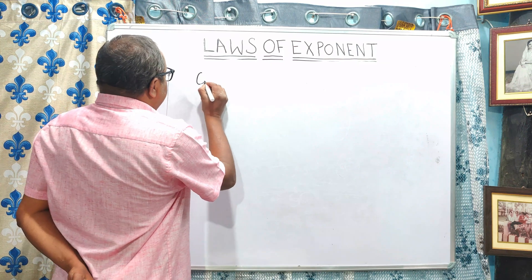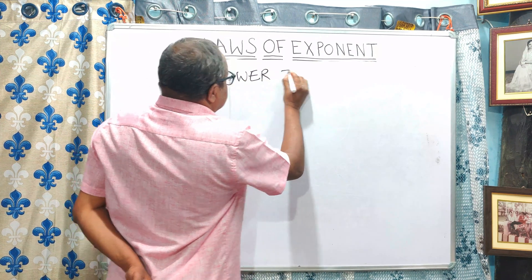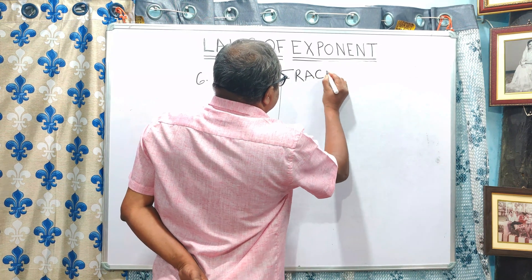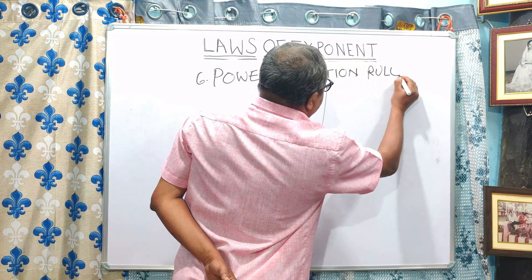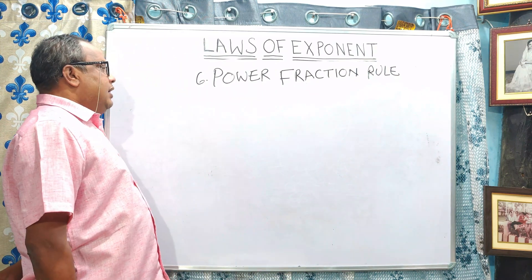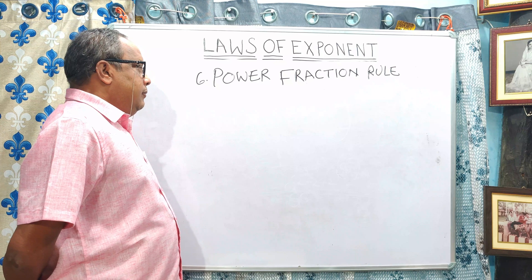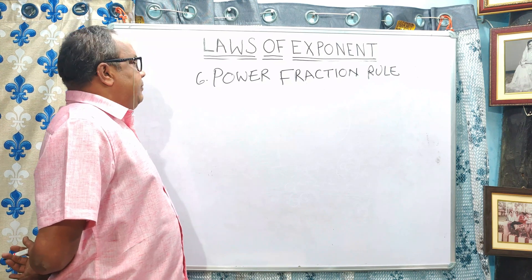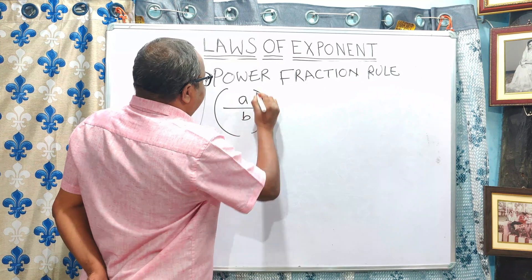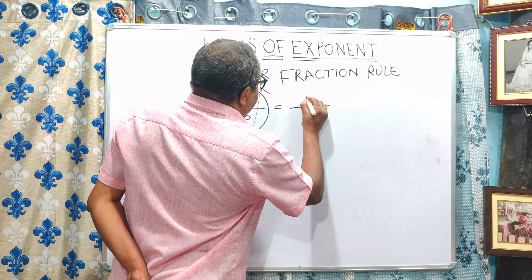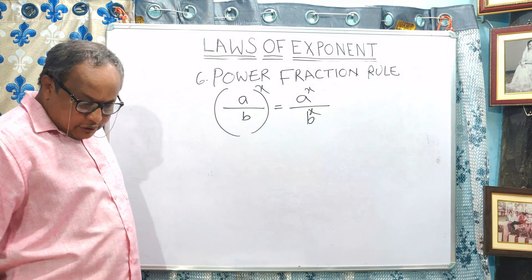Next comes the power fraction rule. The power fraction rule is applicable when a number is divided by another number but their exponent is the same. Let us consider A by B to the power x, which is equal to A to the power x divided by B to the power x. This is called the power fraction rule.